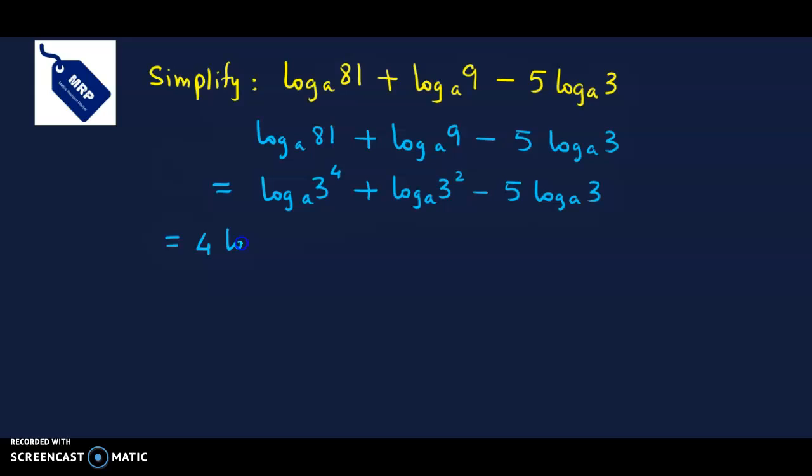So 4 times log 3 to the base a plus 2 times log 3 to the base a minus 5 times log 3 to the base a. Now this is 4 log 3 plus 2 log 3. This will be 6 log 3 to the base a.